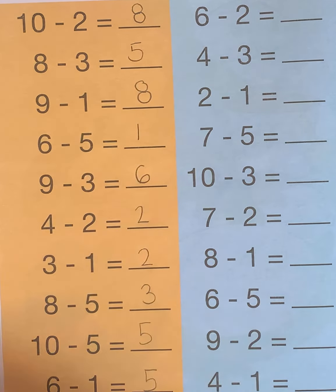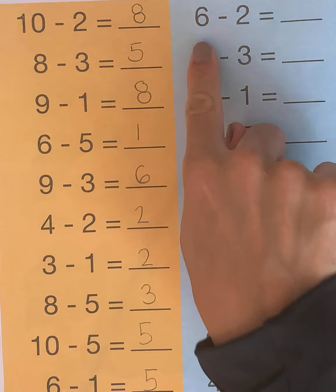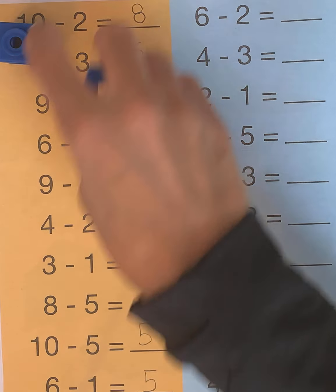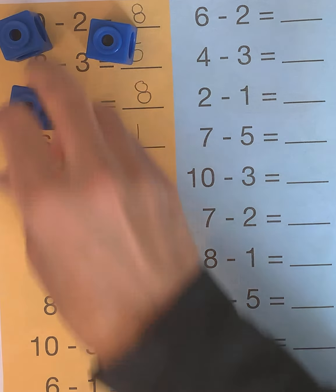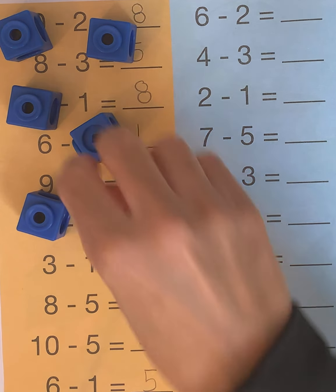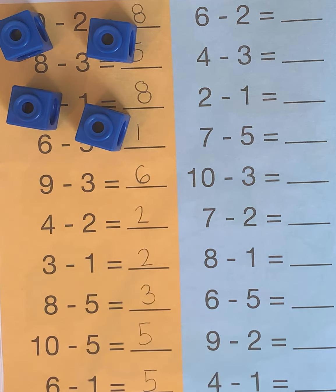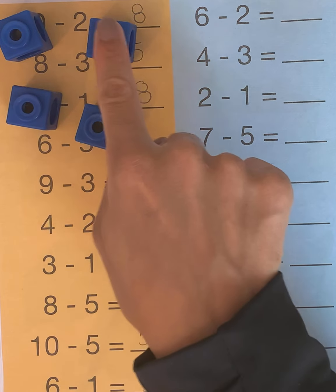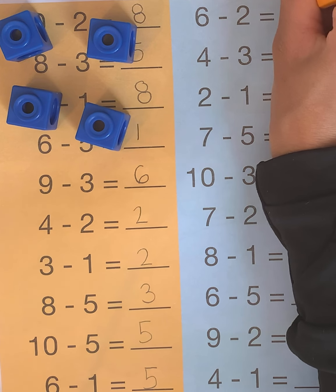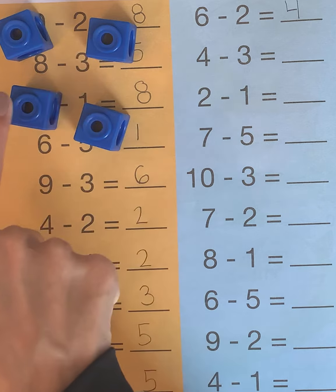Now we're going to do this side. We're going to use some blue cubes now. Our first number is 6. So let's start with 6 cubes: 1, 2, 3, 4, 5, and 6. And we are taking 2 away: 1, 2. How many are left? Can you count them? 4. I got 4. Did you get 4? Let's count together: 1, 2, 3, 4.